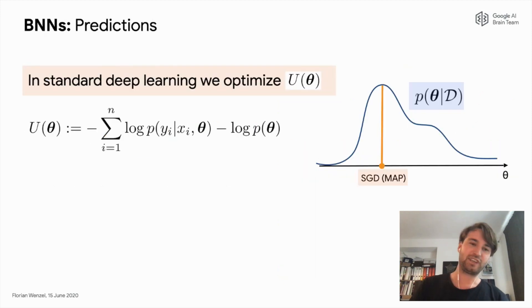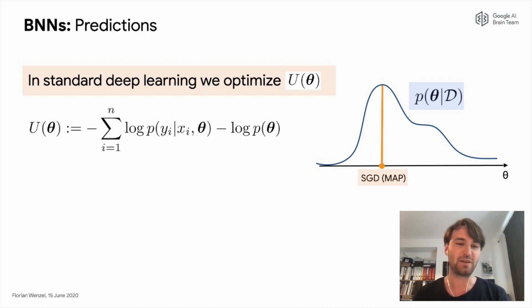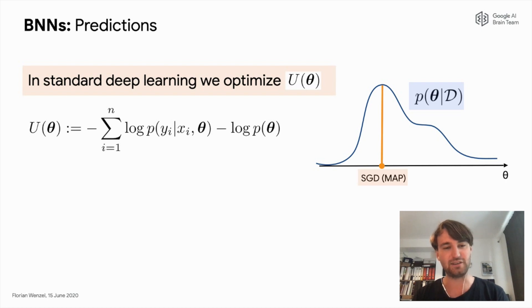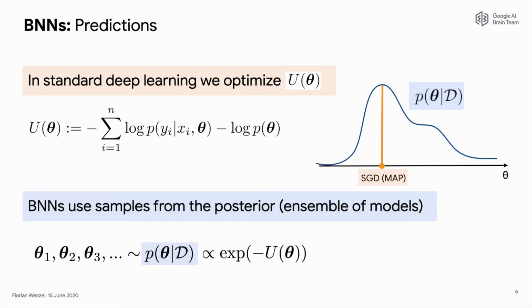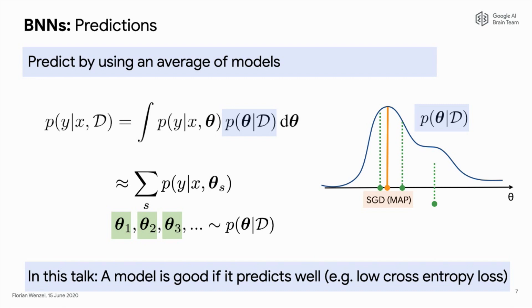How do we do predictions? In standard deep learning we optimize a loss which is the log posterior, given by the log likelihood term and a regularizer term, and then we obtain a single point estimate. In Bayesian deep learning, we sample from the posterior, which can be considered as an ensemble of models. We then use those samples to compute the predictive distribution, which can be viewed as an average over different models.